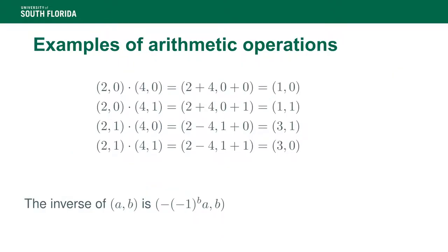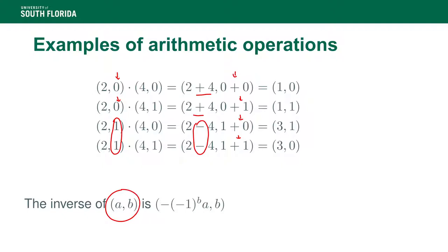Here is an example of the arithmetic operations. When the second coordinate is 0, there's no difference from coordinate-wise addition, so we have 2 plus 4 each time. The second coordinate always adds normally. But when we have 1, then we have a minus between the two first components.